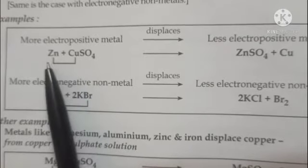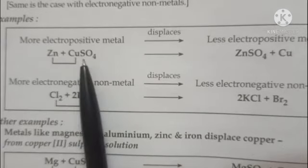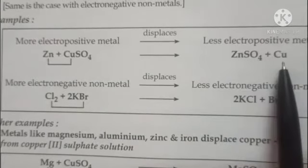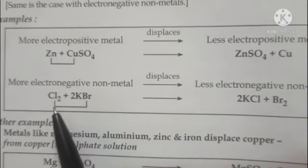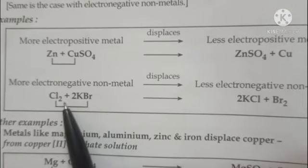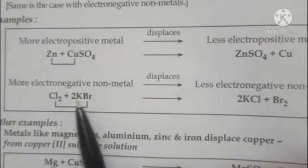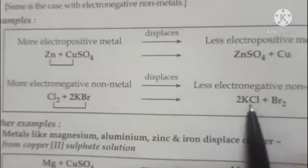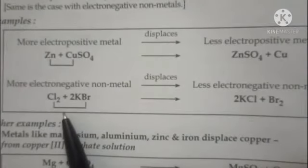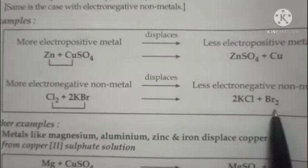In this displacement reaction, zinc can replace copper because zinc's position is above copper in the activity series. So zinc comes in place of copper and forms zinc sulfate and copper. Similarly, chlorine can replace bromine because chlorine's position is above bromine. So chlorine combined with potassium bromide gives potassium chloride and bromine gas.